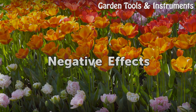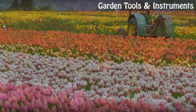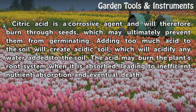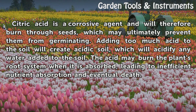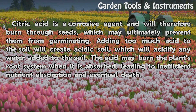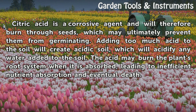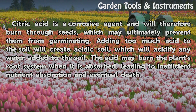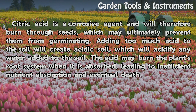Negative Effects. Citric acid is a corrosive agent and will therefore burn through seeds, which may ultimately prevent them from germinating. Adding too much acid to the soil will create acidic soil, which will acidify any water added to the soil. The acid may burn the plant's root system when it is absorbed, leading to inefficient nutrient absorption and eventual death.